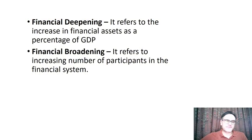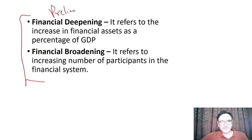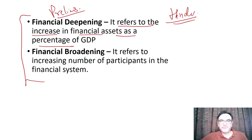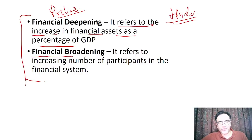Financial deepening refers to the increase in financial assets as a percentage of GDP — how much of the money in the economy is in the form of financial instruments like savings accounts, demand deposits, or FDs as a part of GDP. Financial broadening refers to increasing the number of participants in the financial system — essentially when financial inclusion increases, more people are getting associated with the formal and organized financial system.